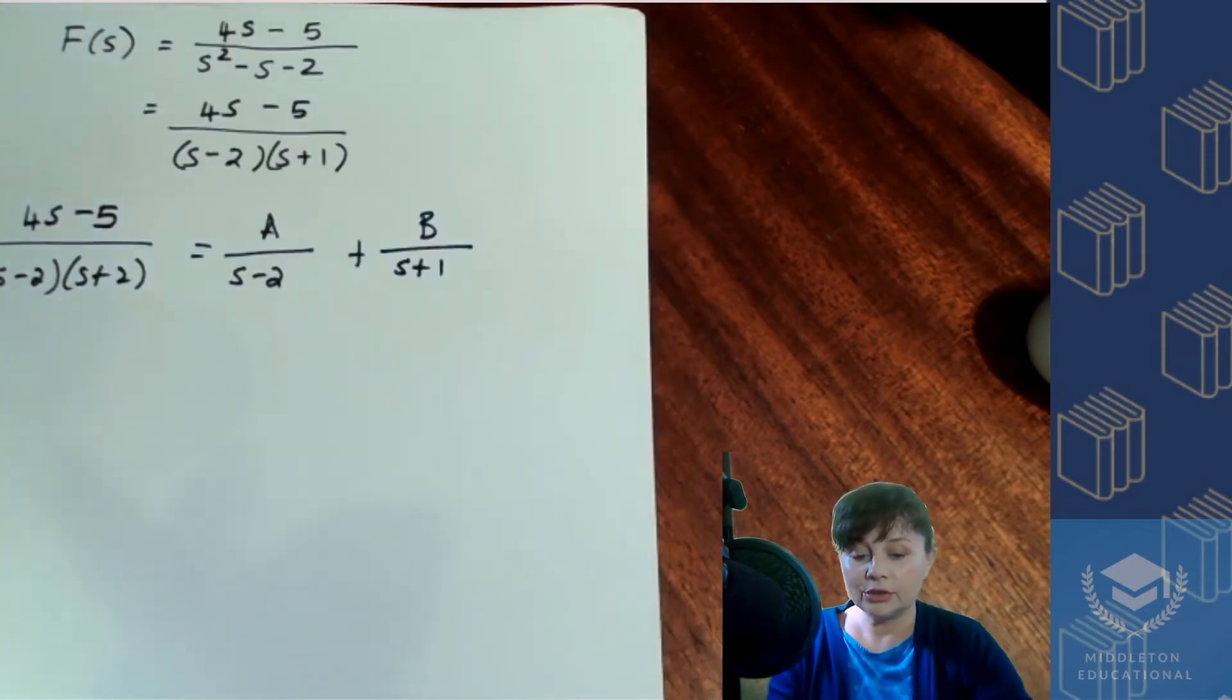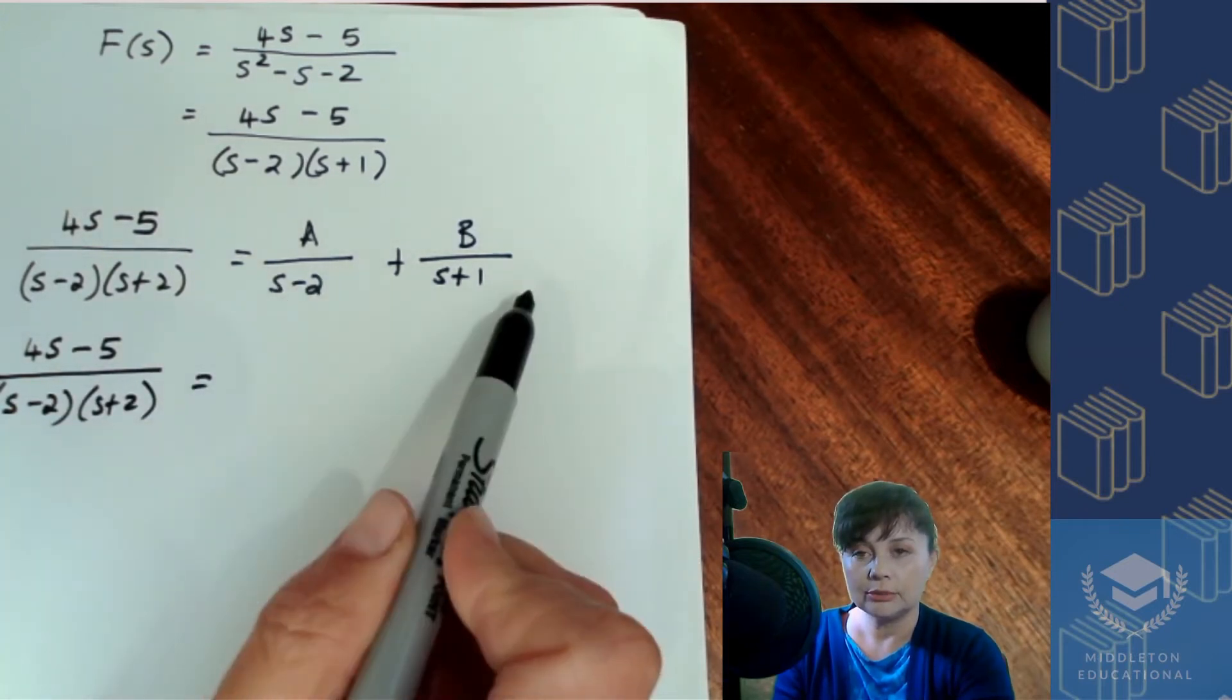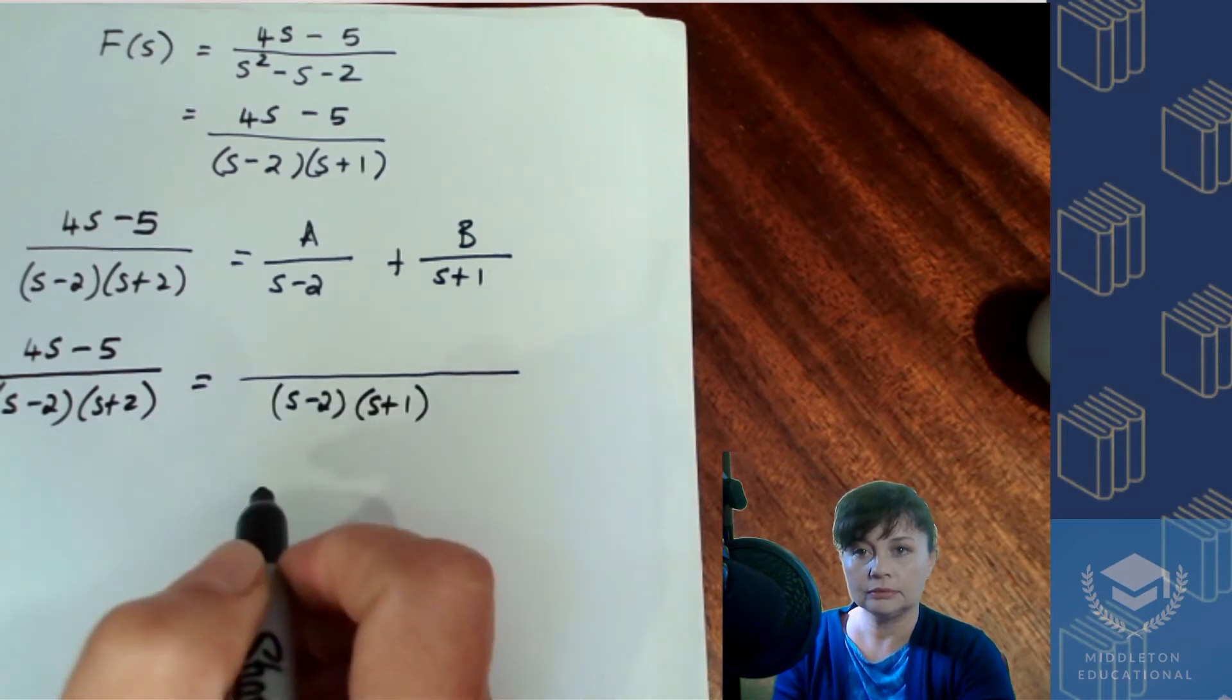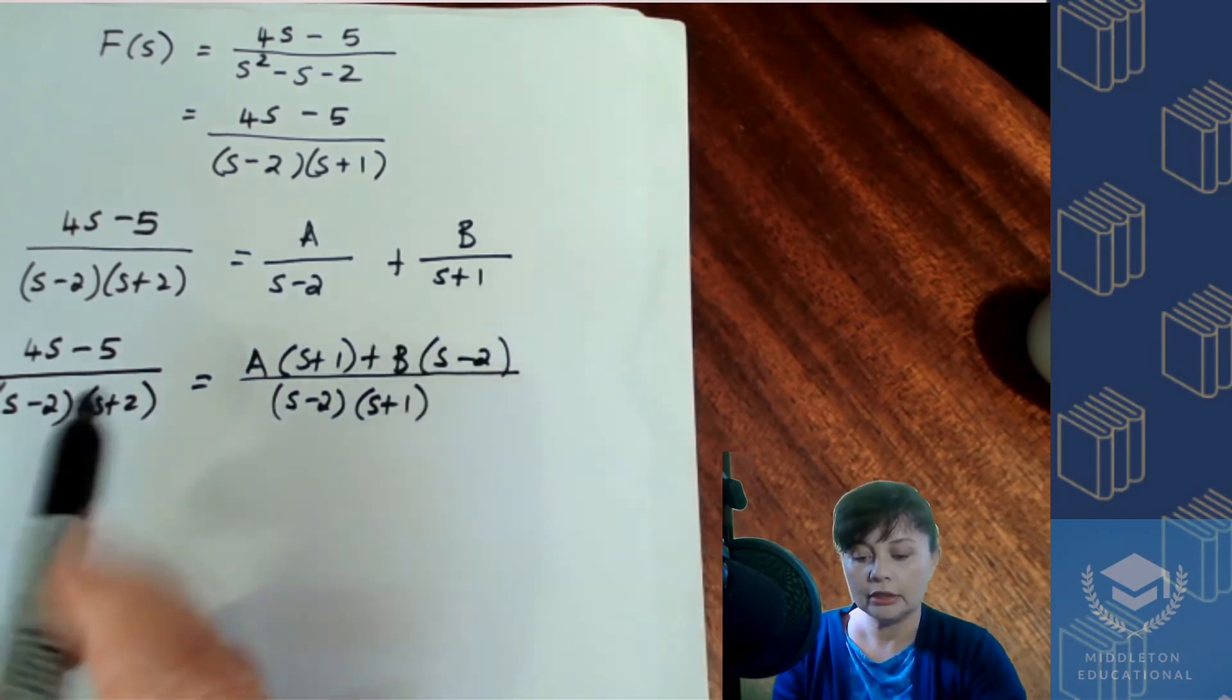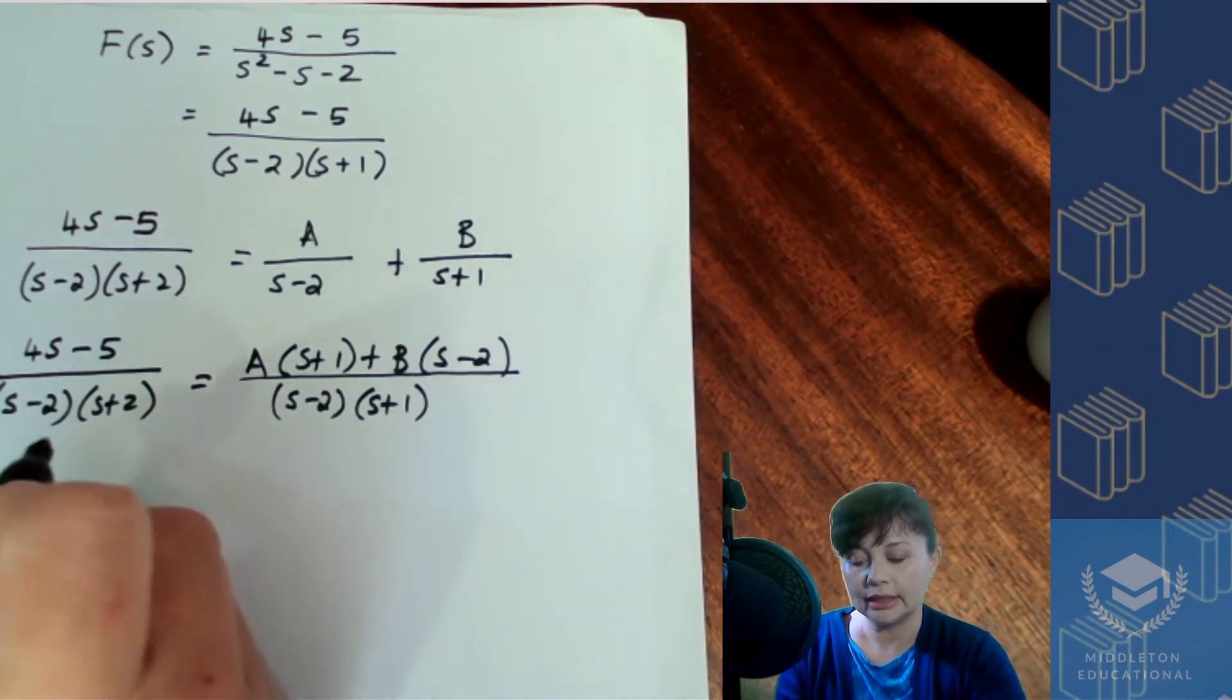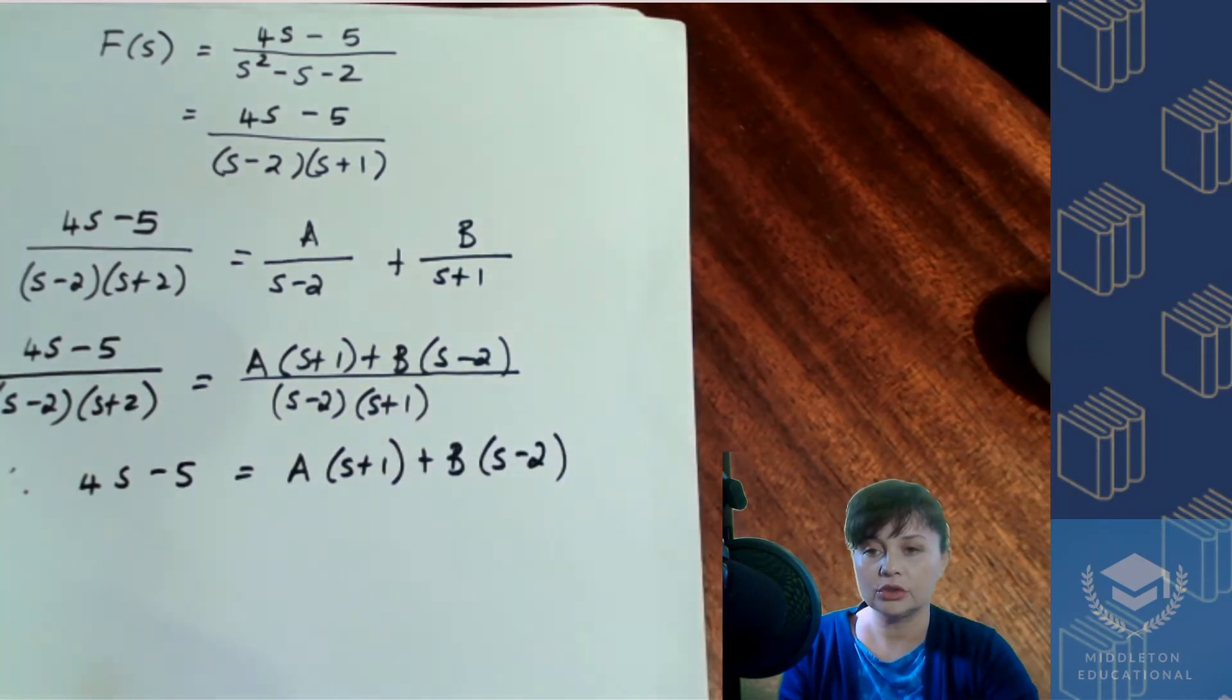So let's find those values of a and b. Now using partial fractions, we can make that to have the same denominator. And that is going to be a times s plus 1 plus b times s minus 2. So you have one expression equal to another, you have the same denominator, and that means your numerators have to be equal to one another. So we can then say, therefore, 4s minus 5 has to be equal to a times s plus 1 plus b times s minus 2.